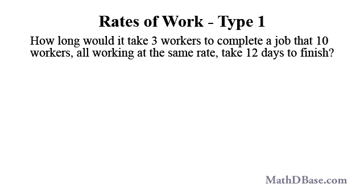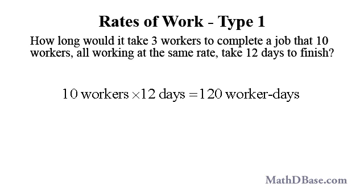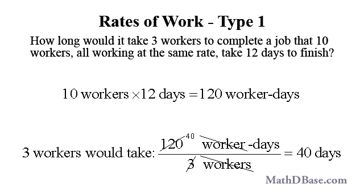How long would it take three workers to complete a job that 10 workers, all working at the same rate, take 12 days to finish? Ten workers times 12 days equals 120 worker days, which is the amount of time it would take one worker to complete the job. Dividing the 120 worker days by three workers, we get 40 days.